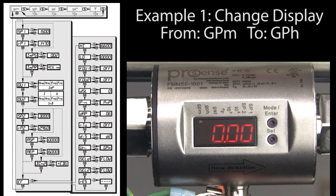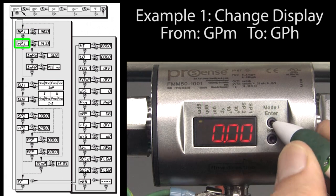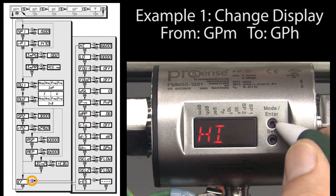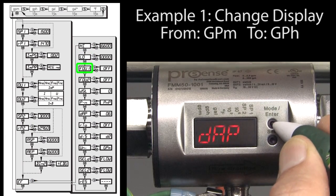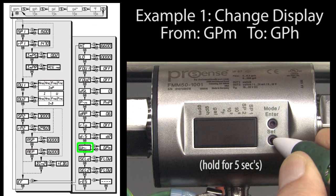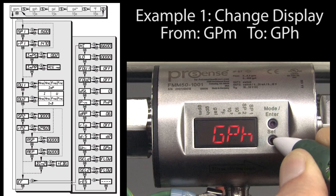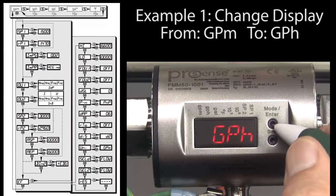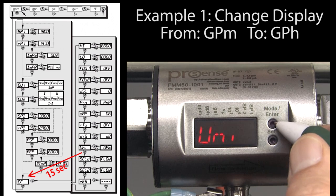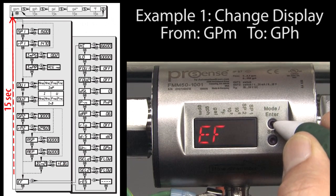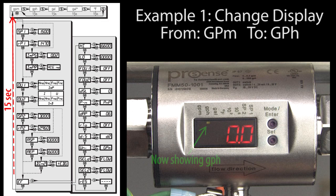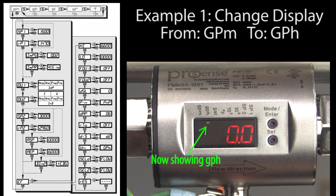Looks like we're currently showing gallons per minute. Let's change that to display gallons per hour. Press the mode button until we get to the extended function menu, select that, then press the mode button to get down to the units parameter. Hold the set button until the display stops blinking. Now we can cycle through the options. We only have two here and we want gallons per hour. To accept the change, press the mode button again. It's quicker to just press the mode button to get us back to the extended function menu and then back to the main display.